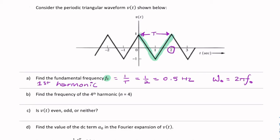All the other harmonics are multiples of the fundamental — they're integer multiples. So the nth harmonic will have a frequency of n times F naught. Part B is asking for the frequency of the fourth harmonic, so the frequency is simply n times F naught. In this case, n is 4, so it's 4 times F naught, which we just found, and that gives me 2 Hertz.